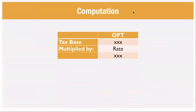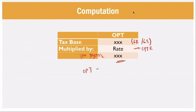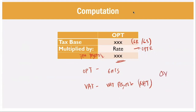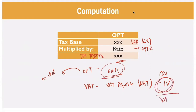How do we compute percentage tax? The tax base is normally your gross receipts or gross sales, multiplied by the rate to get your tax payable. The key difference from VAT: OPT is taxed at gross — whatever is the gross amount, that is the tax base. In VAT, it is taxed at net, meaning output VAT less input VAT. Under OPT, there is no deduction applicable; under VAT, you deduct input VAT.